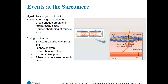These cross-bridges are going to be formed and broken over and over again — kind of like if you were pulling a rope hand over hand to pull someone up who was dangling off the side of a ship or cliff. The rope doesn't get shorter, but the person moves towards you. So during contraction, these head groups grab onto the actin filaments and pull them, sliding the actin filaments over them.